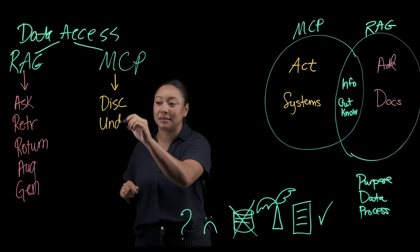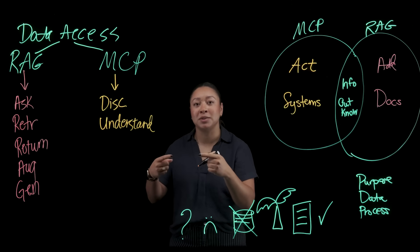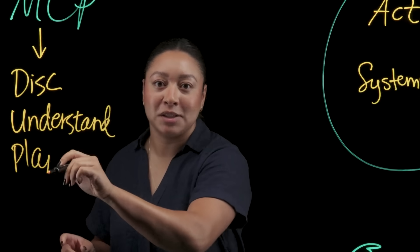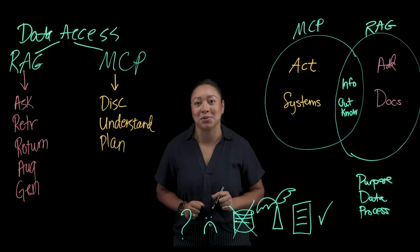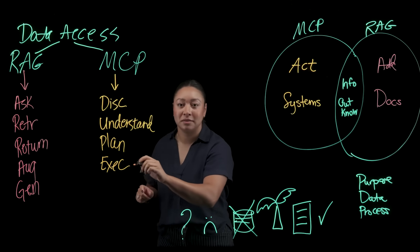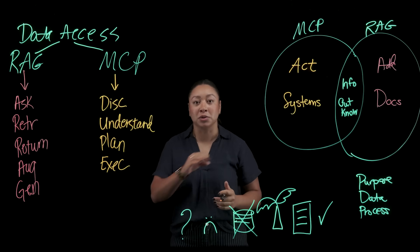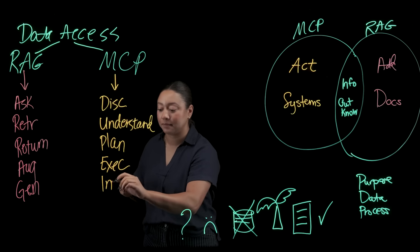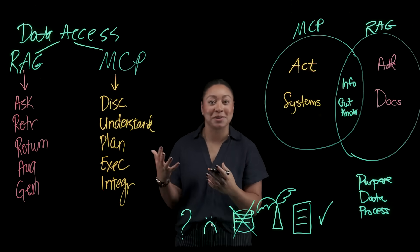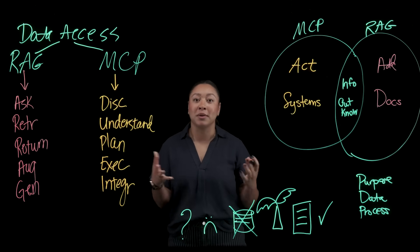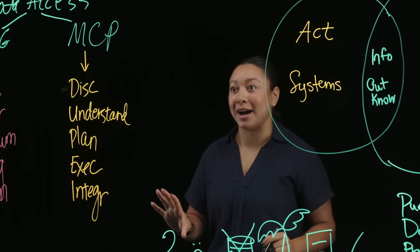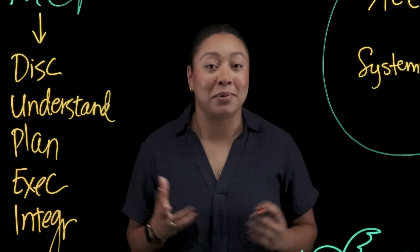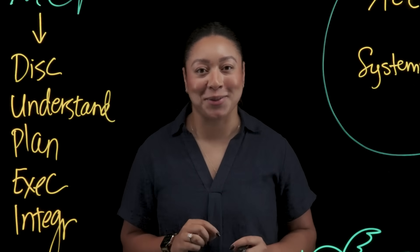The next step is understanding — reading each tool's schema to know how to call it. Then plan — the large language model decides which tools to use and in what order to answer the user's request. Next, execute — sending structured calls through the secure MCP runtime, which runs the tools and returns the results. And lastly, integrate — the large language model uses those results to keep reasoning, make more calls if needed, or finalize an answer or action. In our vacation example, the AI would use MCP to pull the employee's available vacation days from an HR system and even submit a request to their manager through that same system.